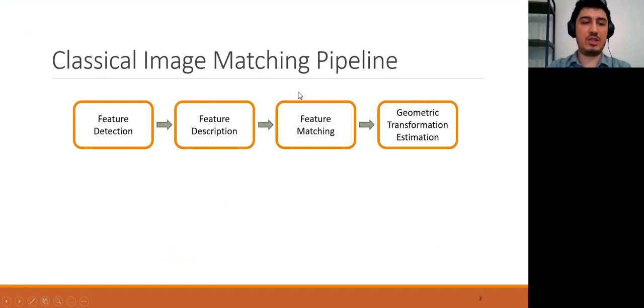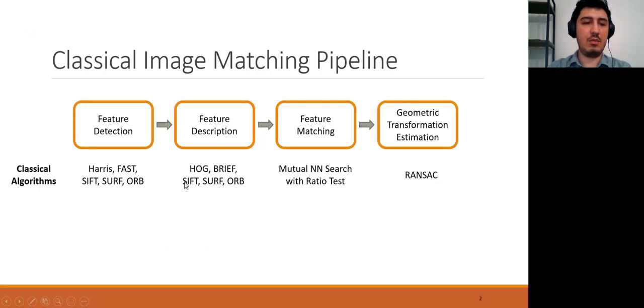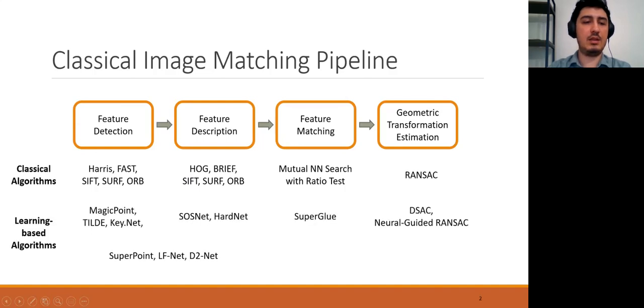Classical Image Matching Pipeline consists of feature detection, description, matching, and geometric transformation estimation steps. Most of the popular algorithms before the deep learning era have focused on one or more phases in this pipeline. During recent years, image matching met deep learning, and a number of variable efforts have been made. However, most of these algorithms still rely on the classical pipeline.